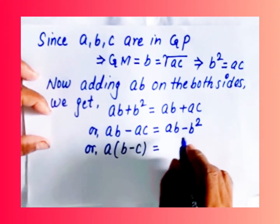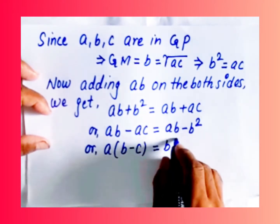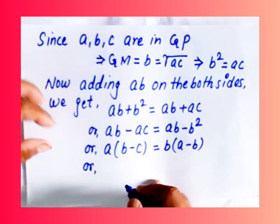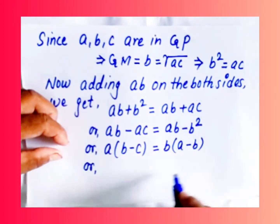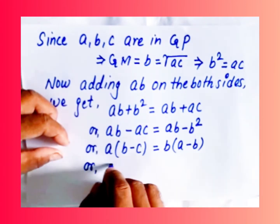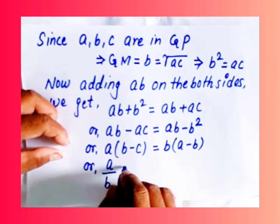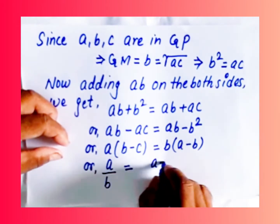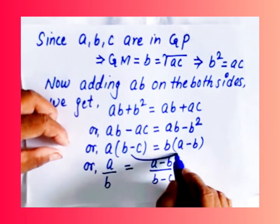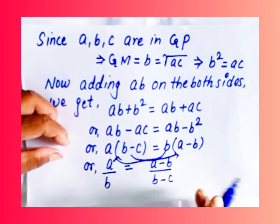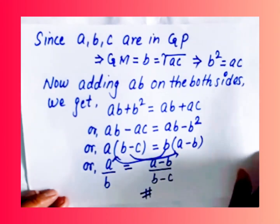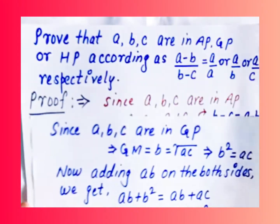Shifting AC to the left side gives AB minus AC equals AB minus B squared. Taking A common on the left gives A(B minus C), and taking B common on the right gives B(A minus B). Shifting (B minus C) to the right and B to the left, this becomes A/B equals (A minus B)/(B minus C), thus proving the GP case.